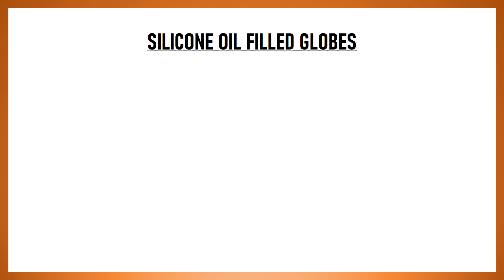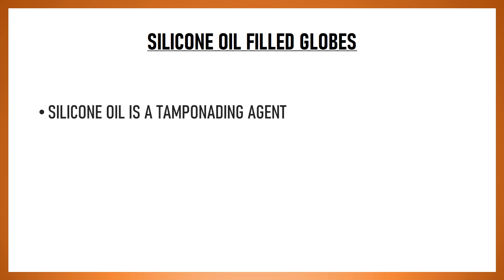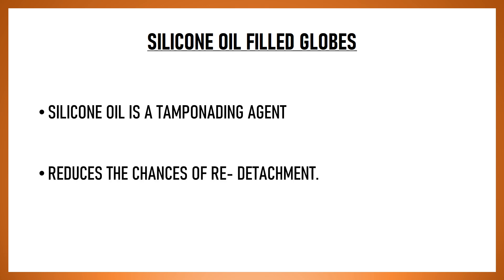Silicon oil is a tamponading agent that is injected into the vitreous cavity during retinal detachment surgery. It helps in keeping the retina settled for a long time and reduces the chances of a re-detachment.